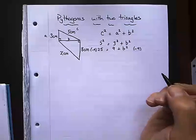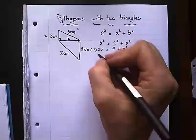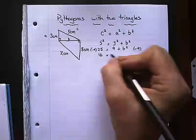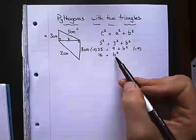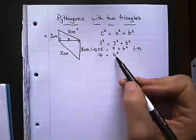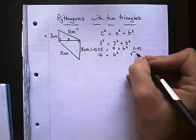And if I take 9 away from 25 I get 16. Okay to find out what B is I don't need B squared I need B. I need to square root the answer. So I'm going to square root both sides.